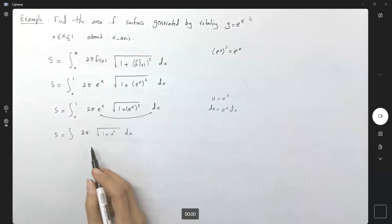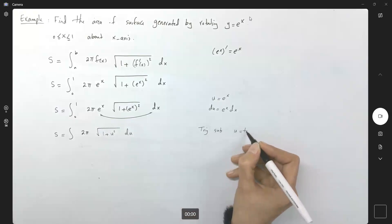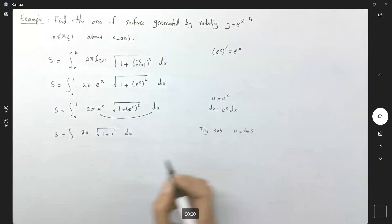Well remember that to calculate this integral we can go back to trig substitution. Trig solve. Let us consider u to be tan θ, and in that case here you have S equals the integral of 2π √(1 + tan^2 θ)...